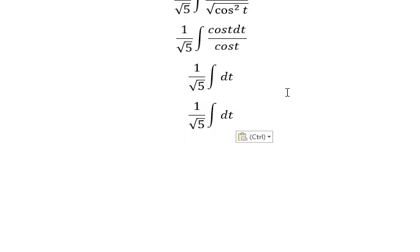Cos t divided by cos t, you got number 1. Now we can answer this one. It's about t plus C.